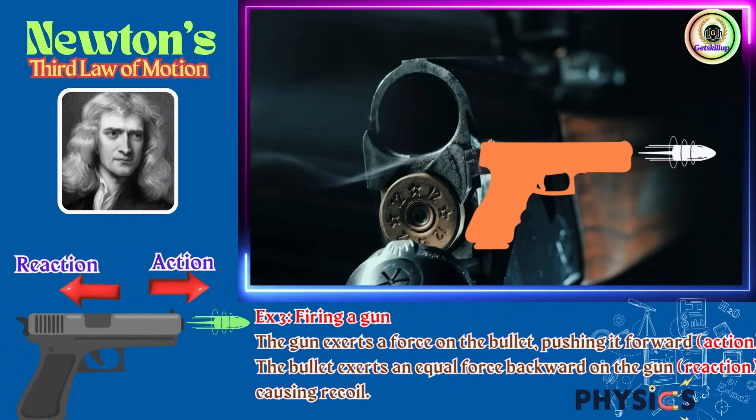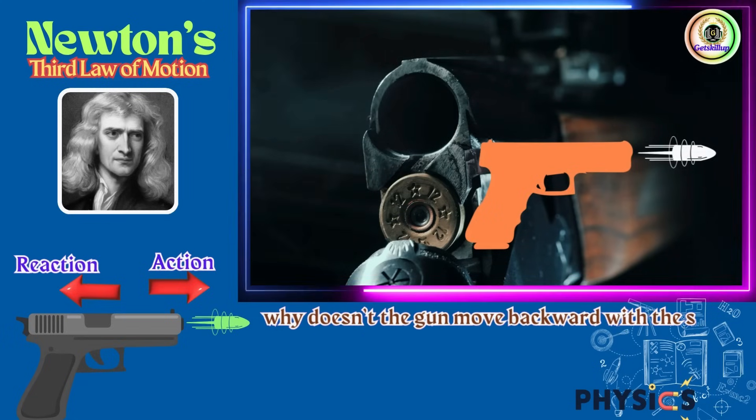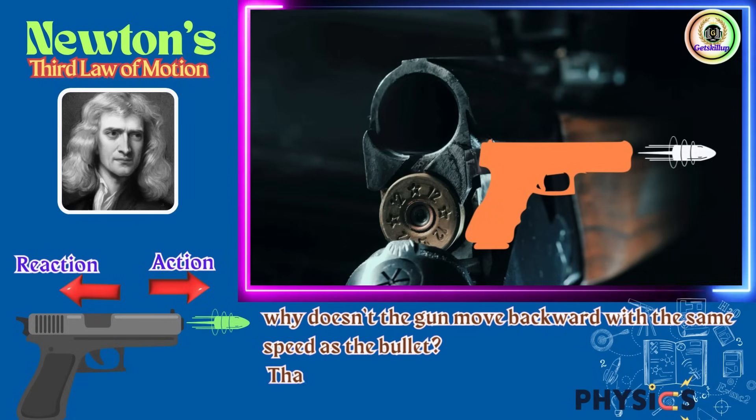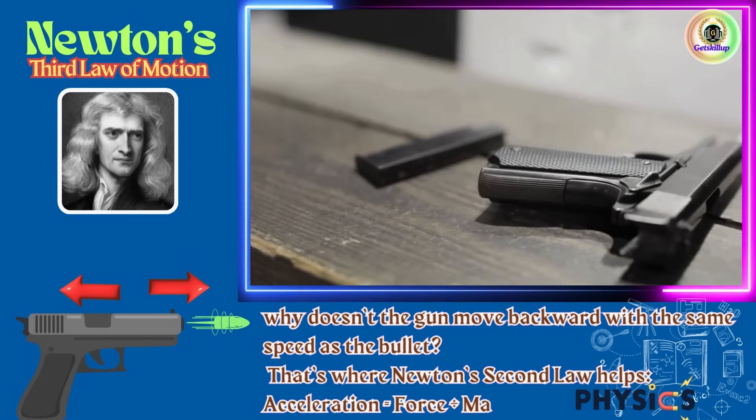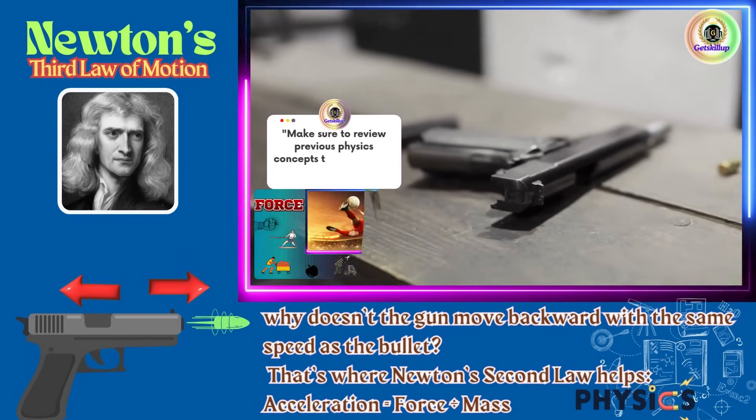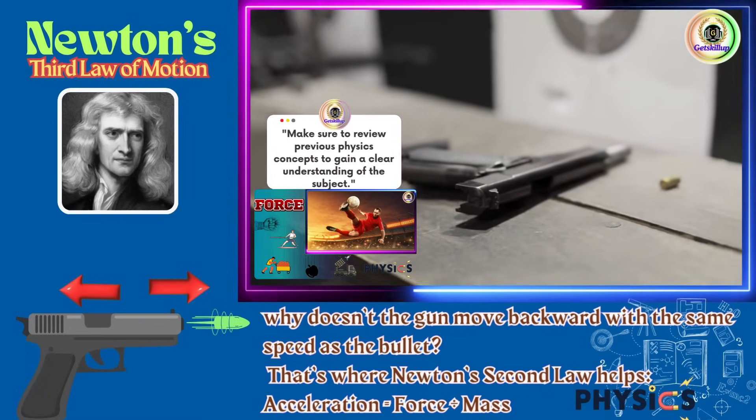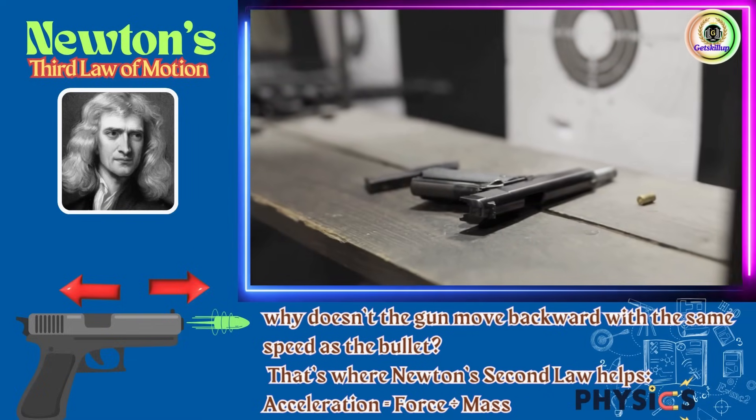But you might wonder, why doesn't the gun move backward with the same speed as the bullet? That's where Newton's second law helps. Acceleration equals force divided by mass. Since the mass of the gun is much greater than the mass of the bullet, the acceleration recoil of the gun is much smaller.